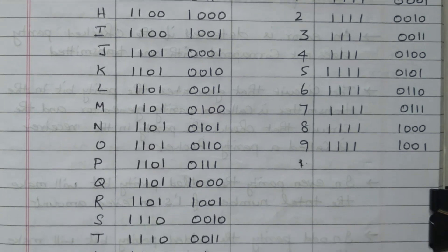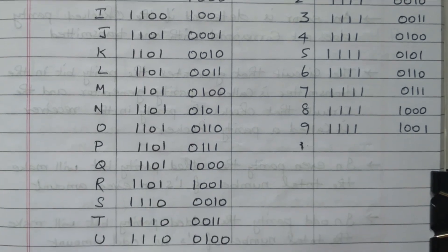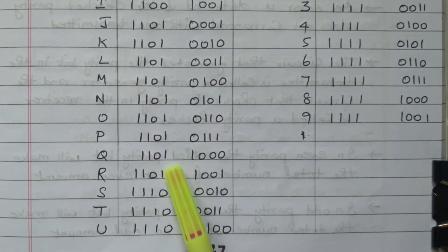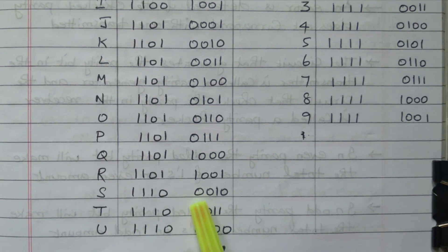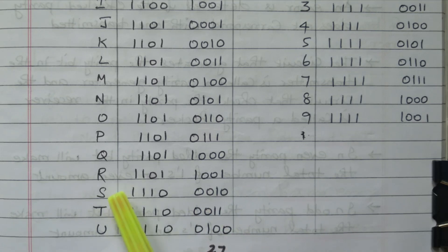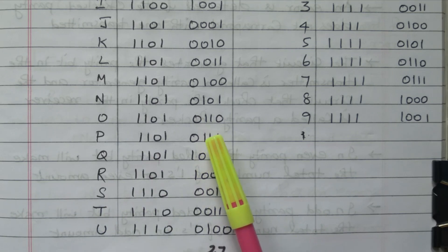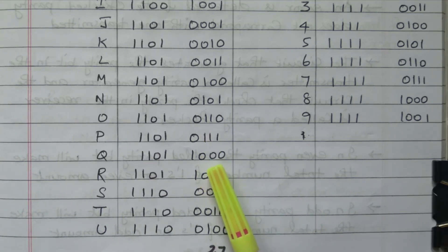The MSB changes from 1101 to 1110 and goes to the next stage — 1110. Again it starts from 0010 for S, T, U, and so on. The LSB and MSB keep on increasing. Here we have represented only the capital letters and numbers; other characters are also available.